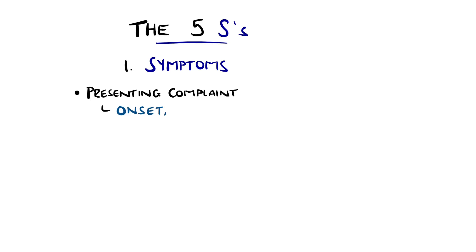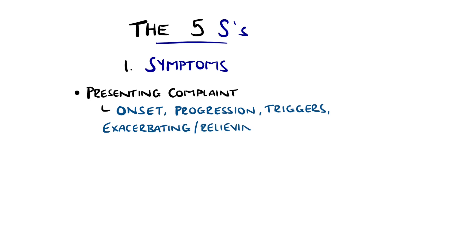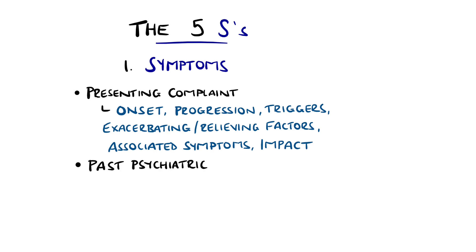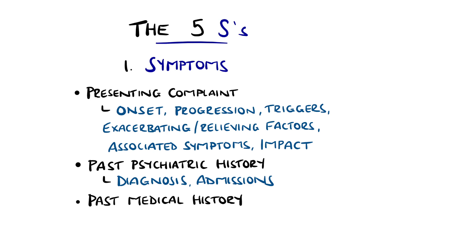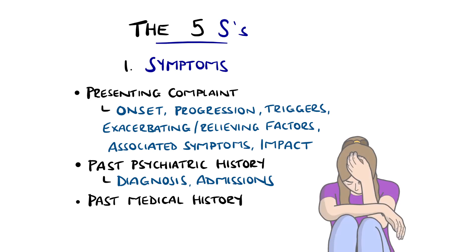Features of the complaint include when it started, whether it has worsened or progressed, any clear triggers, any exacerbating or relieving factors, as well as associated symptoms and the impact on daily life. Past psychiatric history can include previous diagnoses or admissions, and past medical history can also be relevant, so is worth asking about. Bear in mind that it can be difficult for people to discuss mental health issues, especially compared to physical problems.